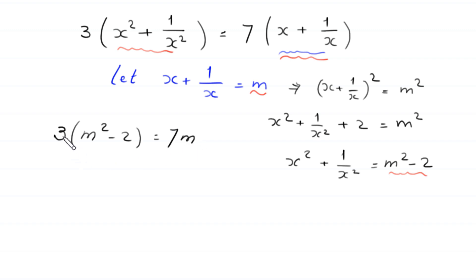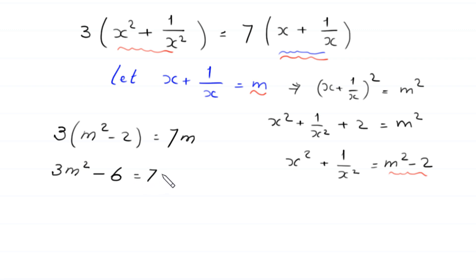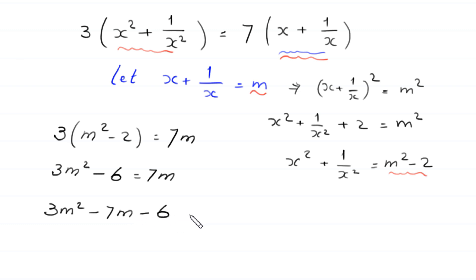Now, 3 times m squared will become 3m squared, and 3 times negative 2 is negative 6, equal to 7m. We move this 7m to the left side, then this equation will become 3m squared minus 7m minus 6 is equal to 0.